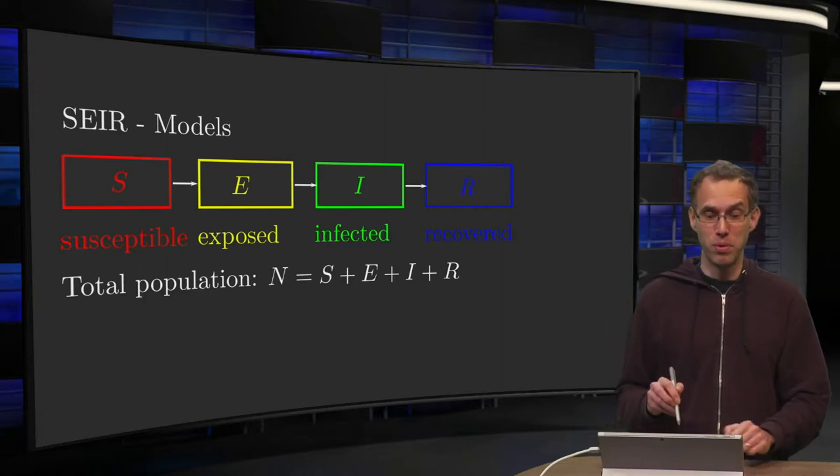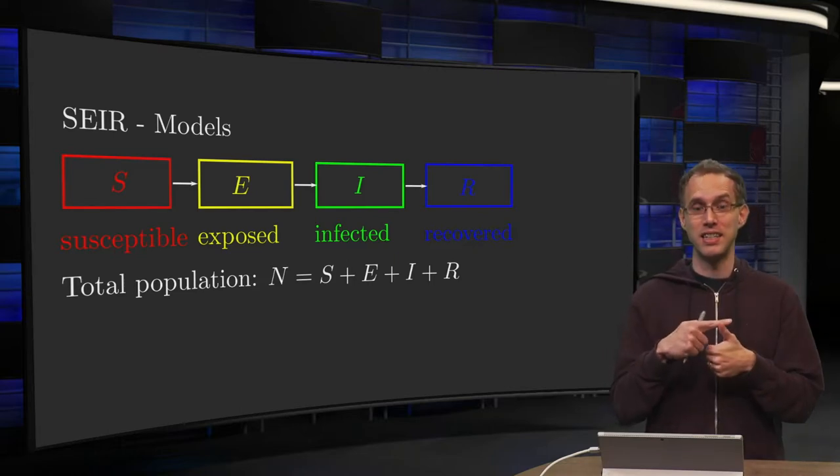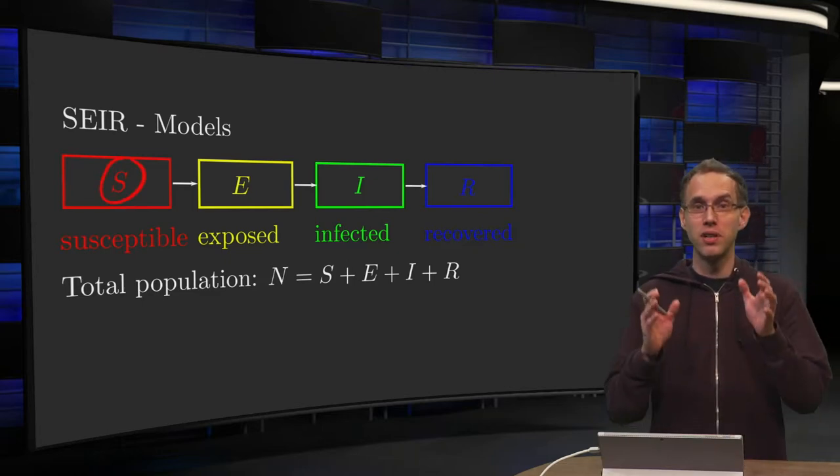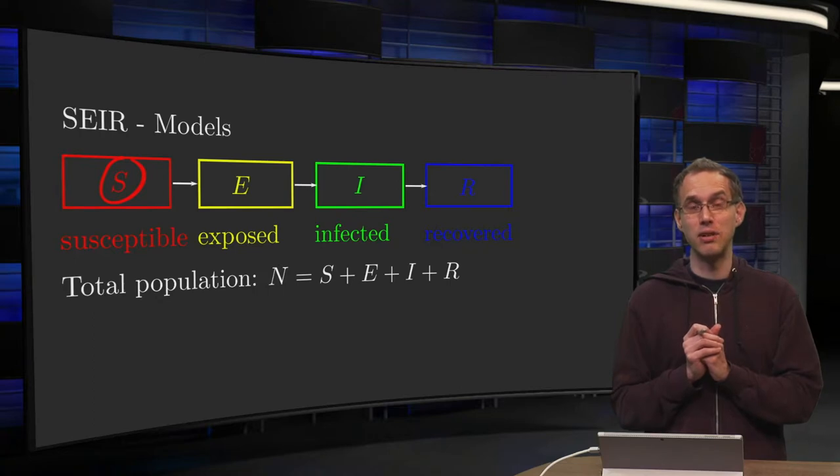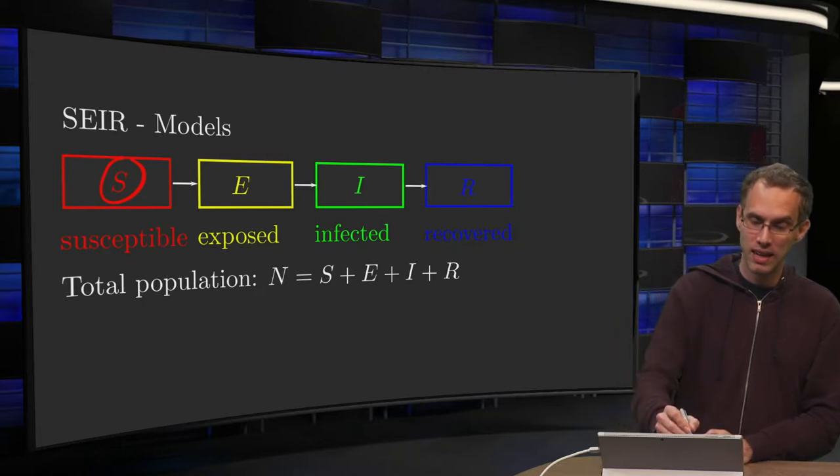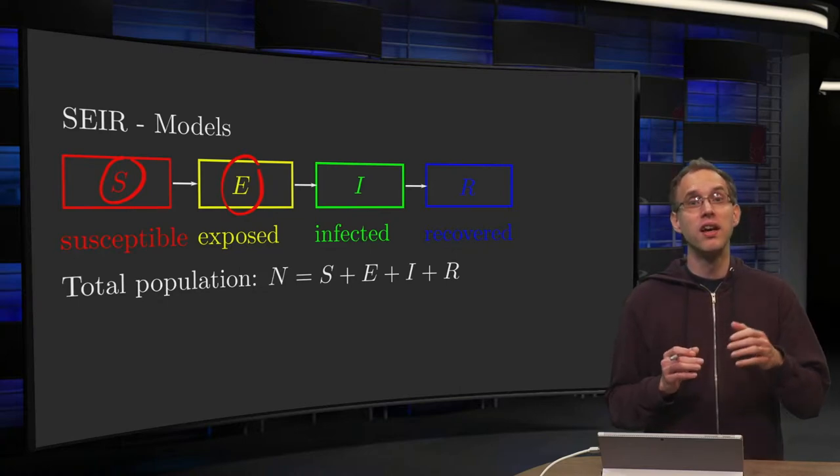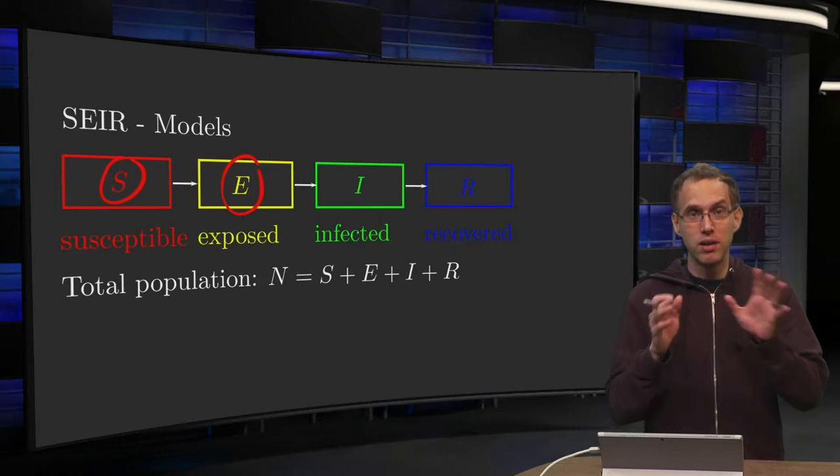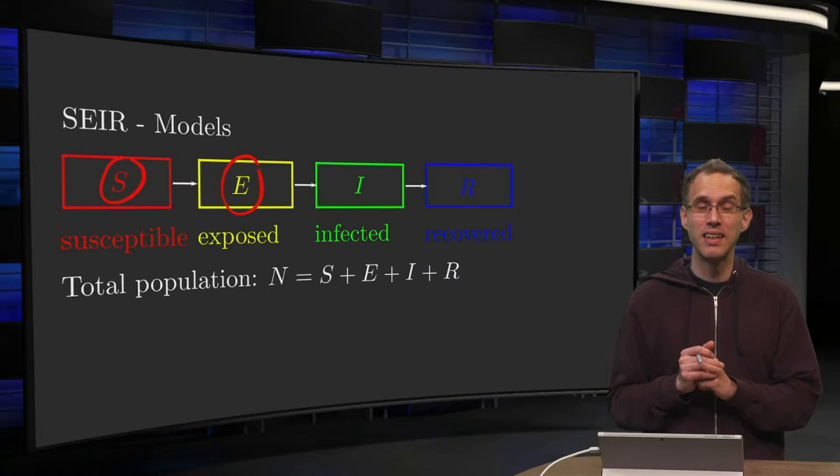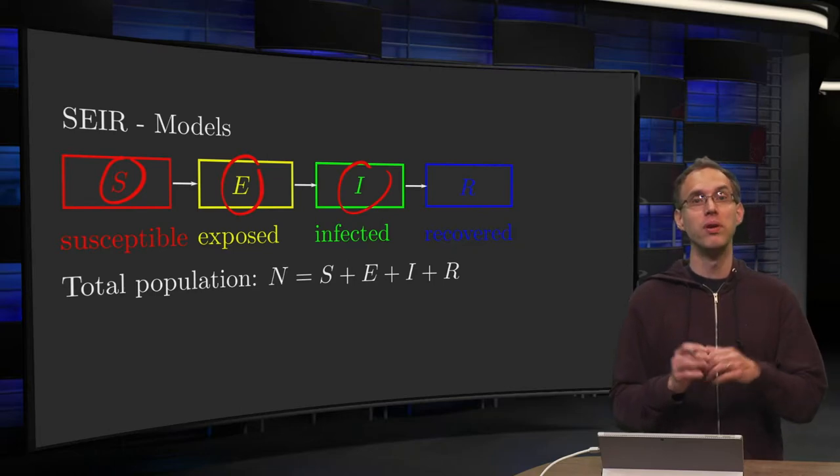So what is the idea of the model? We are going to split up the entire population into four groups: S, susceptibles. Susceptibles are people who have not yet gotten the virus, so initially all people are in the group of the susceptibles. Then the E, the exposed. Those are the people who have contacted the virus but are still in the exposure stage, so they are assumed not to be infectious yet. Then after several days the exposed people will move to the group of infected people, those who have the illness, are infectious and actually sick.